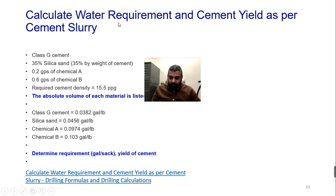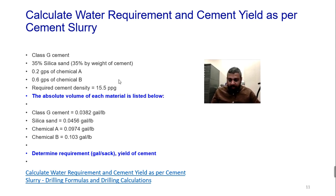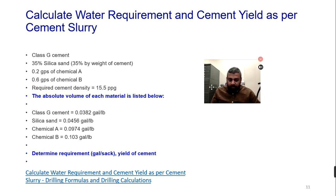For example, if you are using Class G cement along with silica, you must determine how many gallons of water are needed per sack and what is the yield of slurry you will get. These calculations are very important — without them, your cement job will be poor. The answers to these calculations are linked below so you can download them.